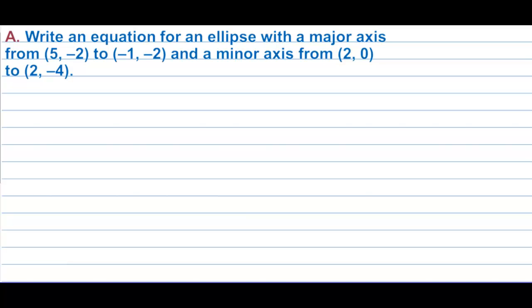Write an equation for an ellipse with a major axis from (5,-2) to (-1,-2) and a minor axis from (2,0) to (2,-4). Let's plot these points.